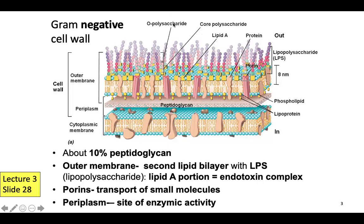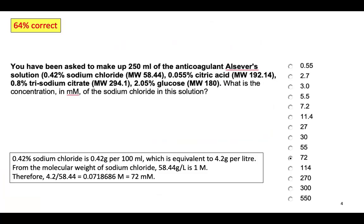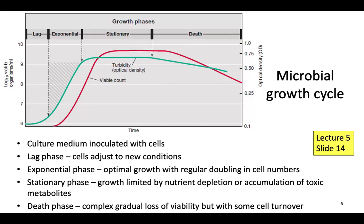The Gram-negative cell wall has an outer membrane, a thin layer of peptidoglycan, and a cytoplasmic membrane. The outer layer is composed of polysaccharides, lipid A, and proteins. There are porins for transport of small molecules. You should be able to label these diagrams for both Gram-positive and Gram-negative bacterial cells — this is one of the questions from your course assessment, so please practice it.